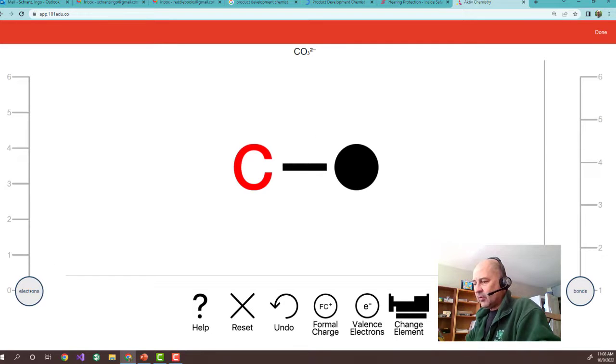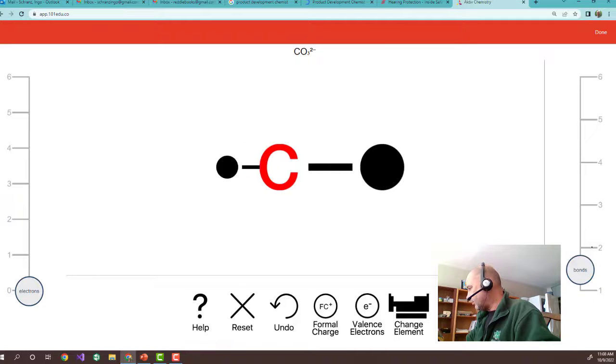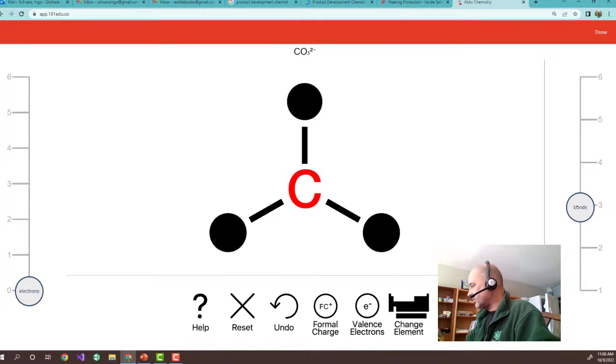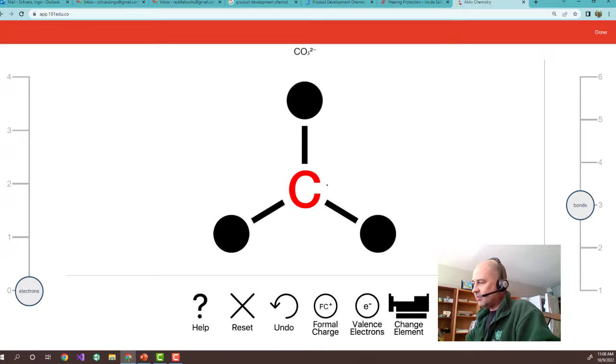And then, you can decide here on the left. You can give it electrons. And on the right, you can give it bonds. So, we know that carbon is going to have three bonds. So, you go to three. There it is. We don't have any lone pairs. So, you don't want to have electrons.